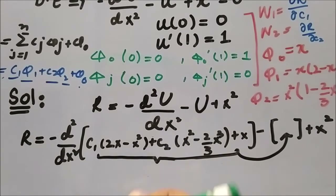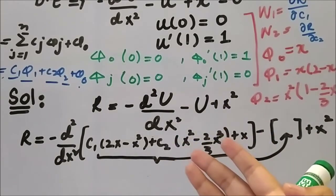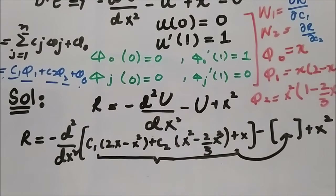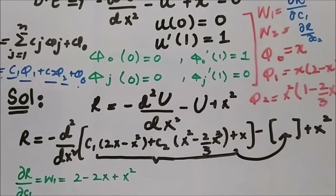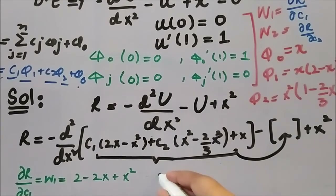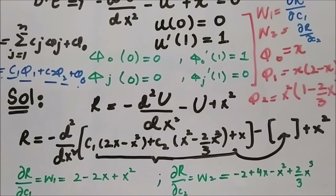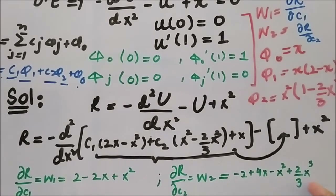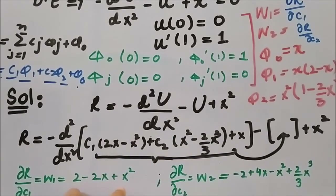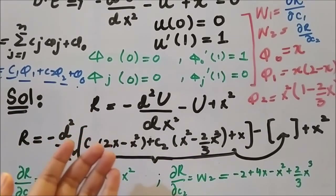I am going to write the partial derivatives of R with respect to c1 and c2 so you can verify your own solutions. w1, the partial derivative of R with respect to c1, equals 2 minus 2x plus x squared. And w2 is the partial derivative of R with respect to c2. Now we know the next step: we plug w1 and w2 into the weighted integral statement along with R.